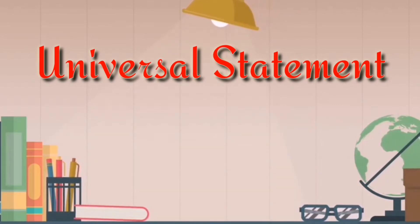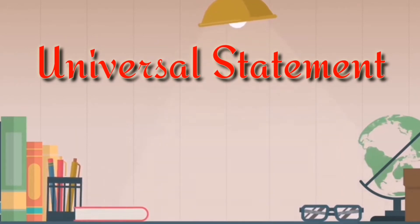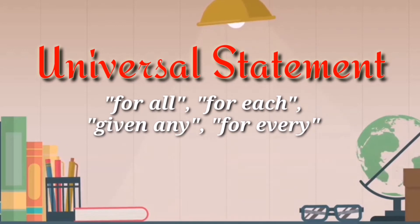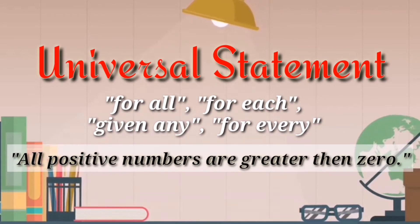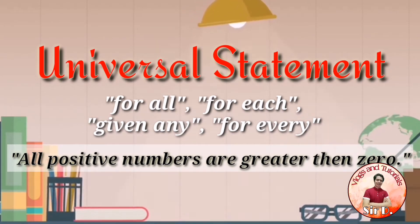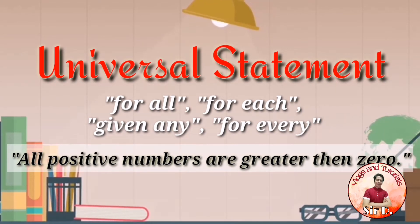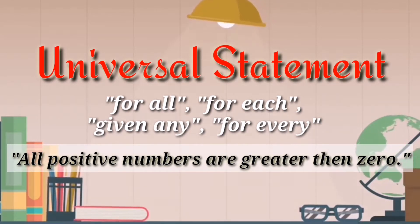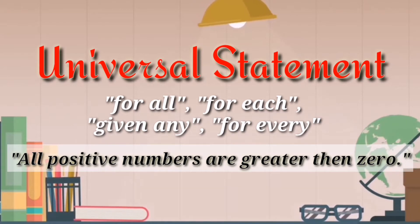A universal statement says that a certain property is true for all elements in a set. For example, all positive numbers are greater than zero. The word 'all' is what we call a universal qualifier — not only 'for all,' but also 'for each,' 'given any,' and 'for every.' Those are our universal qualifiers that make a statement a universal statement.